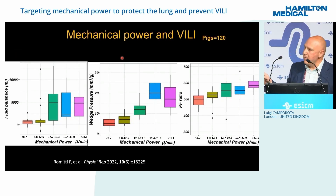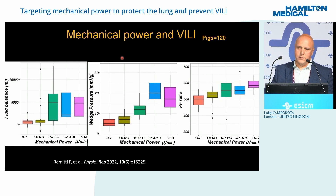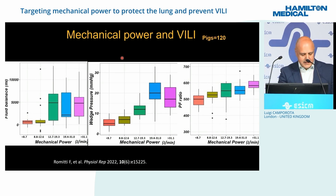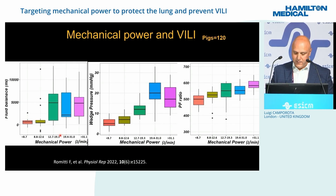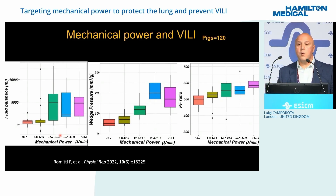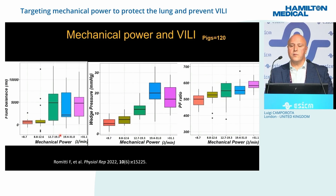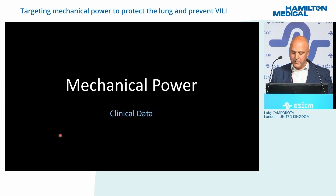In experiments with larger animals — pigs — as mechanical power increases, the lungs become heavier, fluid balance increases, wedge pressure increases, and the PF ratio also changes. More pressure may appear to improve the PF ratio, but the lung becomes more injured. In the long term, this is damaging.